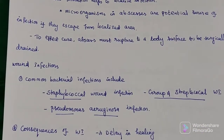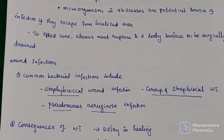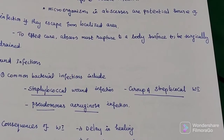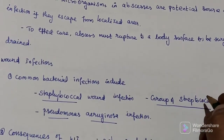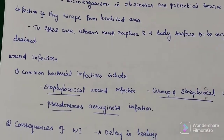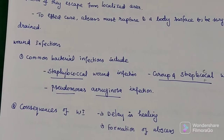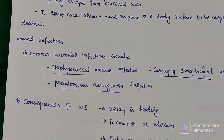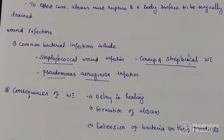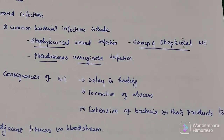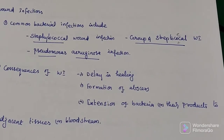Common bacterial wound infections include staphylococcal wound infection, Group A streptococcal wound infection, and Pseudomonas aeruginosa infection. Certain consequences of wound infection include delay in healing, formation of abscesses, and extension of bacteria and other products to adjacent tissue or the bloodstream.